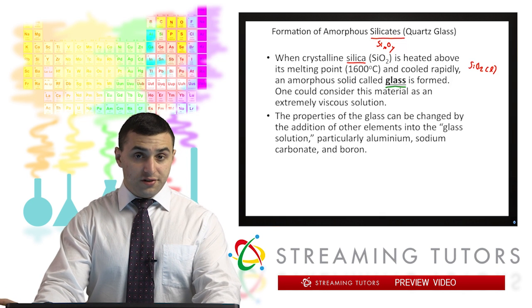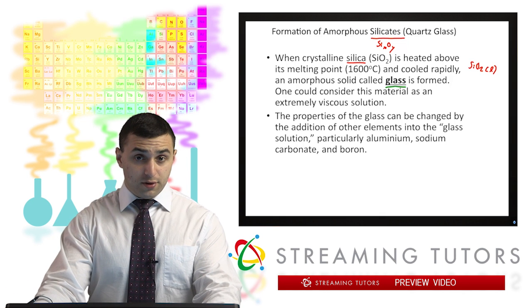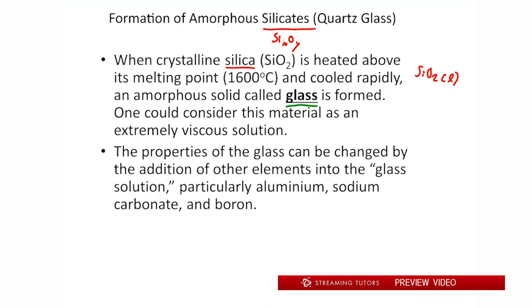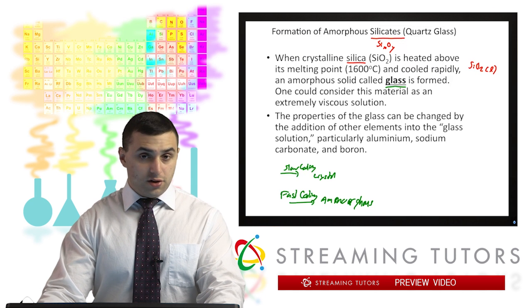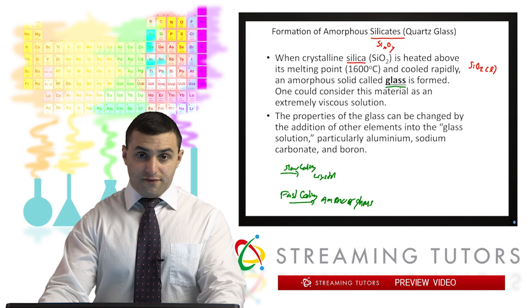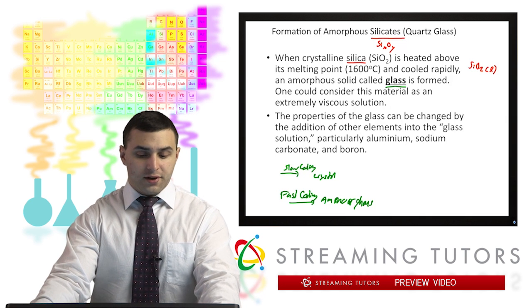So if we had cooled this more slowly, we would have gotten crystalline SiO2. So if we get slow cooling, we get a crystal. If we do fast cooling, we'll typically get an amorphous solid. And this is typically the case for any kind of solid as well, although they're not all going to form glasses. But in general, the quicker you cool a liquid into a solid, the more likely you'll get an amorphous solid.